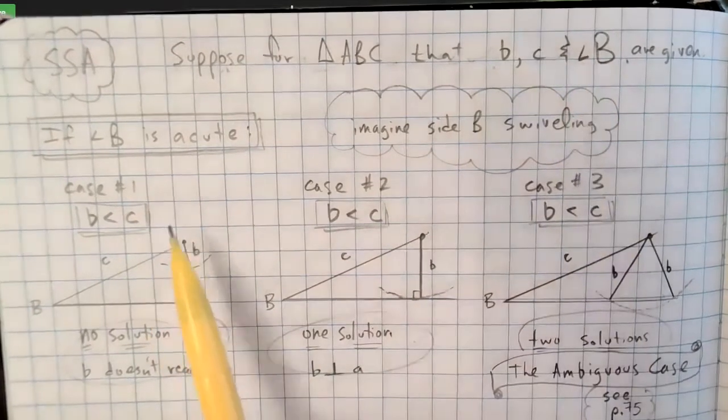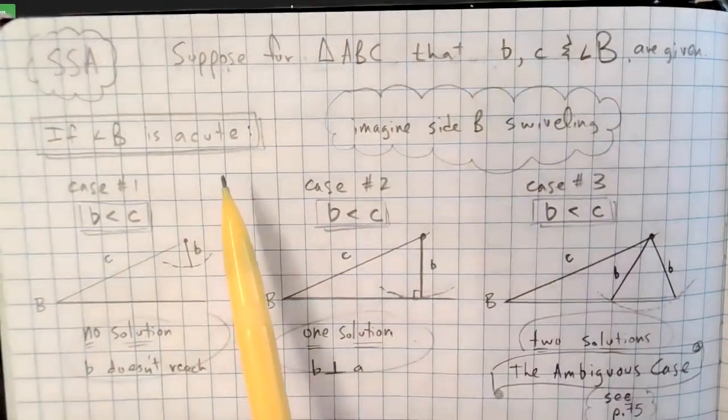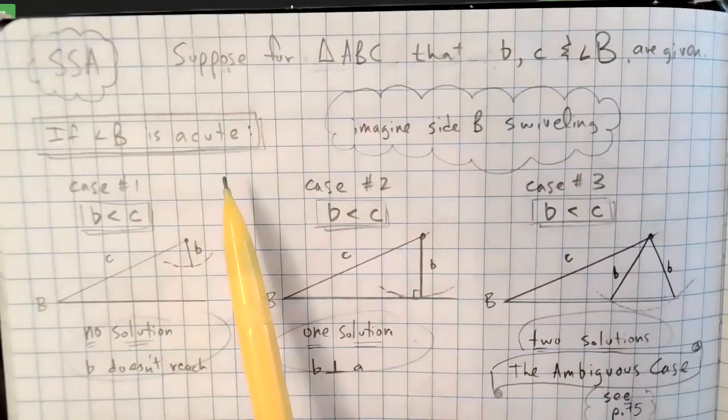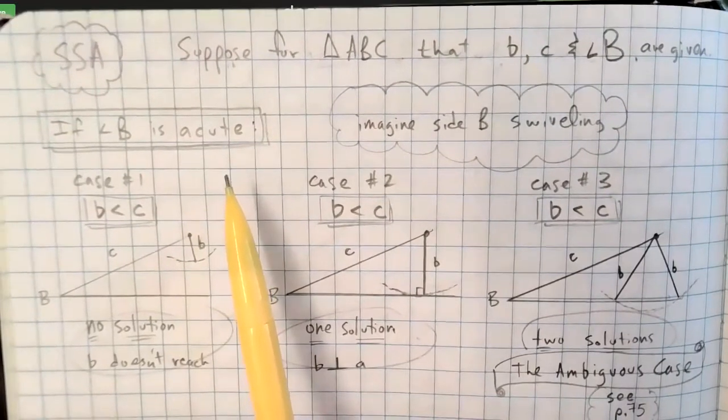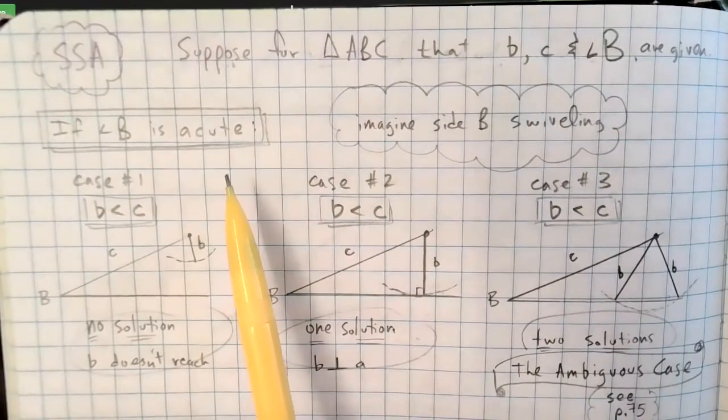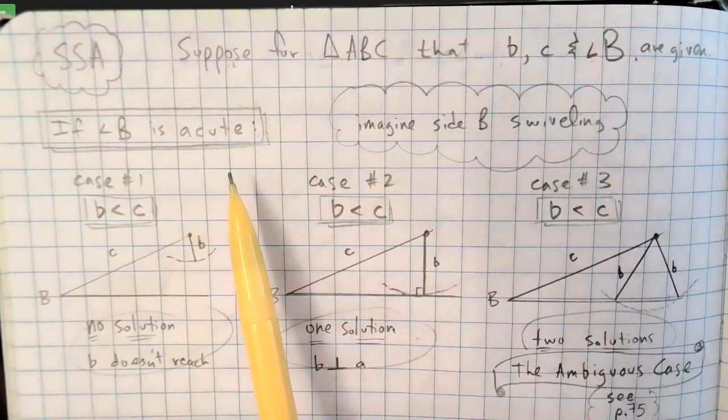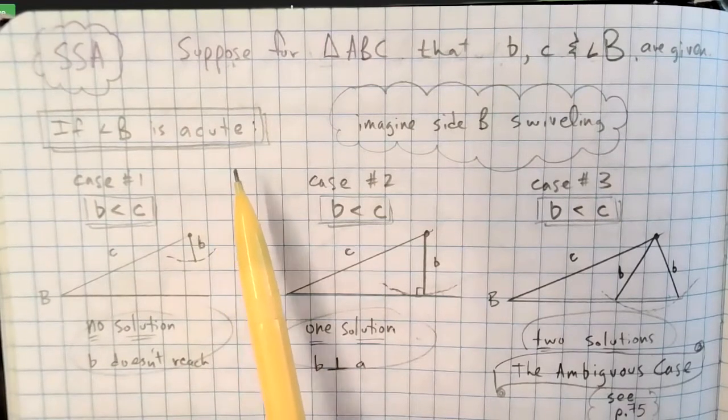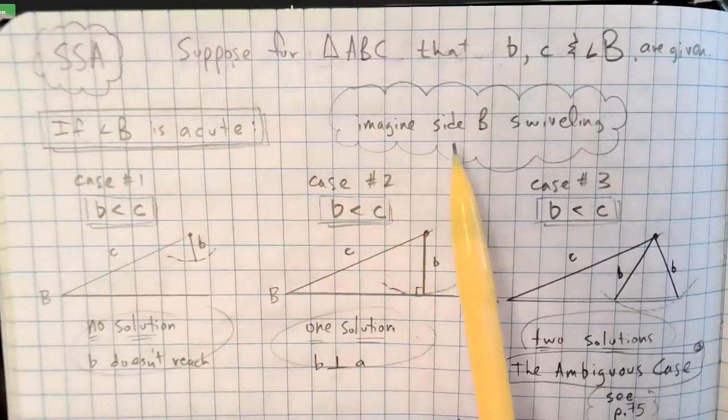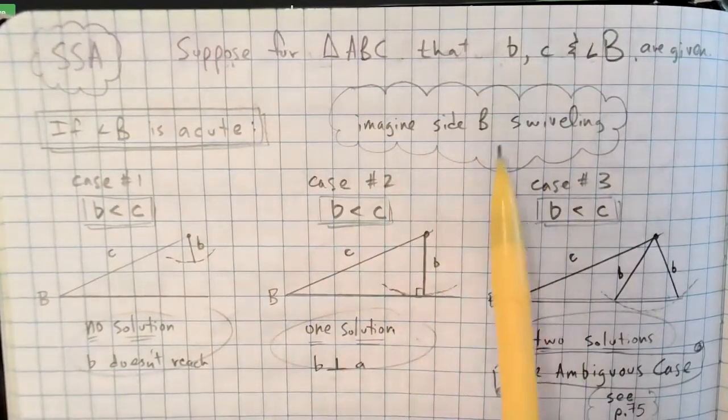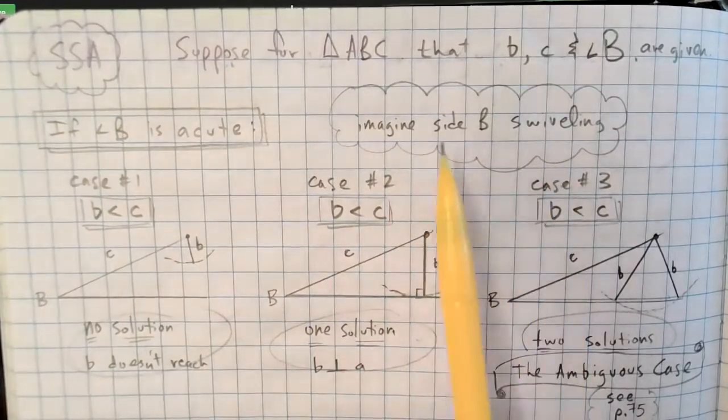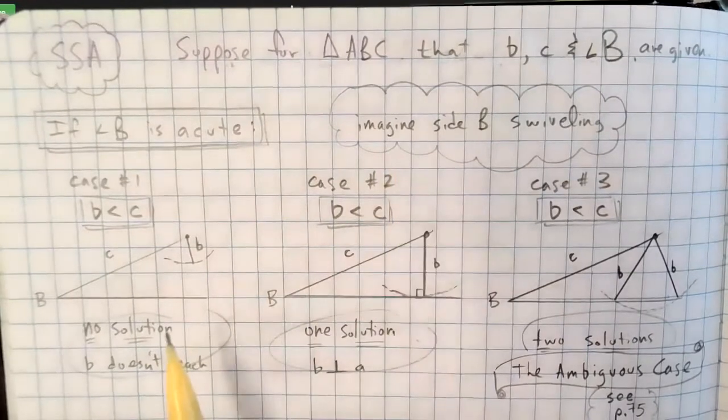We're going to skip angle B being right, because you could use all the trig functions for that. That's below our level right here. We're making this a little more complex, so we're not going to talk about right triangles. Right now we're going to talk about acute triangles and obtuse triangles. And each time here, we're going to imagine that side b will be swiveling to try to find the third side of the triangle.